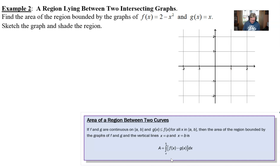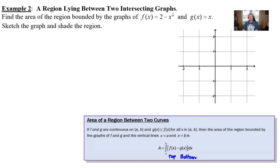Sketch the graph and shade the region. You'll notice down in the bottom right corner I do have the box for our area between curves formula, which is just integrating f minus g. I'm going to use a little color here to sketch 2 minus x squared in blue.